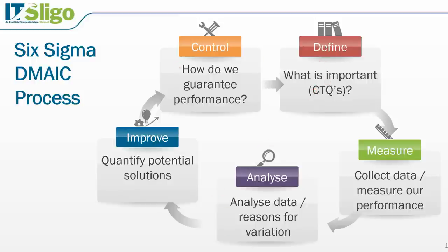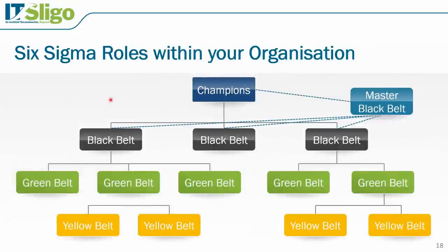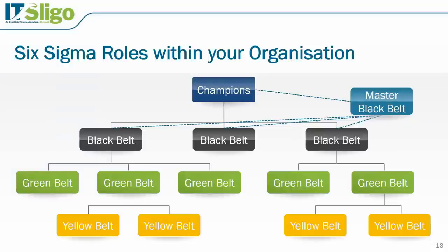Now let's talk about Six Sigma roles within your organization. GE really made this popular with the concept of a Six Sigma Champion. Some large organizations have Master Black Belts; others typically have Black Belts and Green Belts. Some companies have also implemented a Yellow Belt, which is an introductory-level qualification. But the main roles you'll commonly come across are Green Belts and Black Belts within organizations.